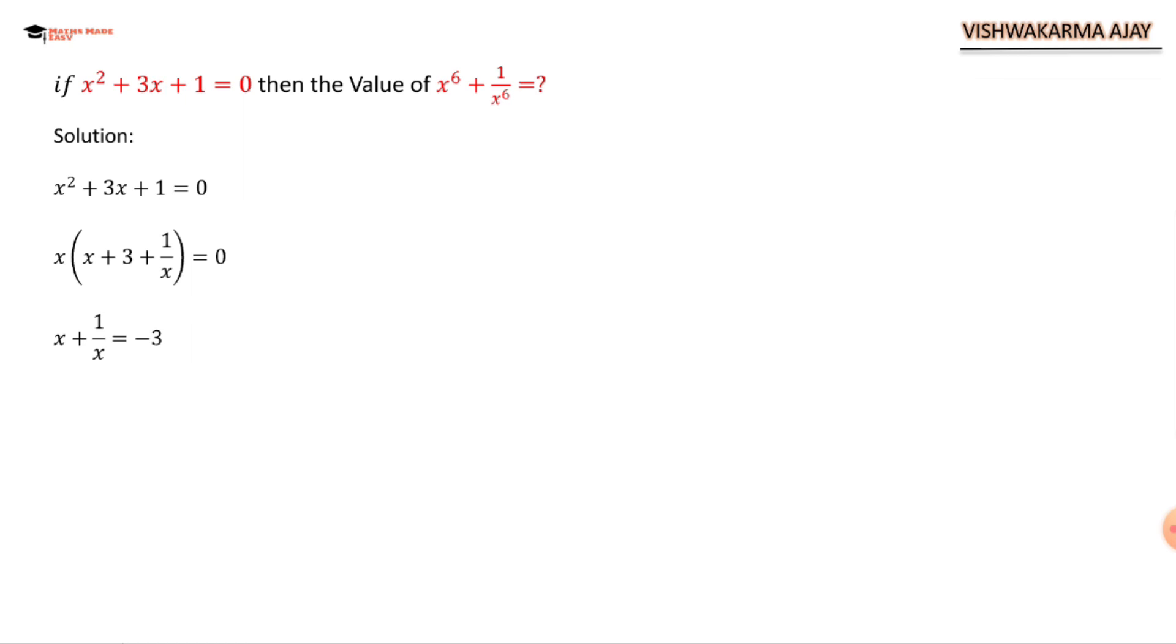Next we are going to square this equation. Applying the formula of (a + b)², we get x² + 2x(1/x) + 1/x² = 9. x and x get cancelled, 2 will shift to the other hand, so we have x² + 1/x² = 7.